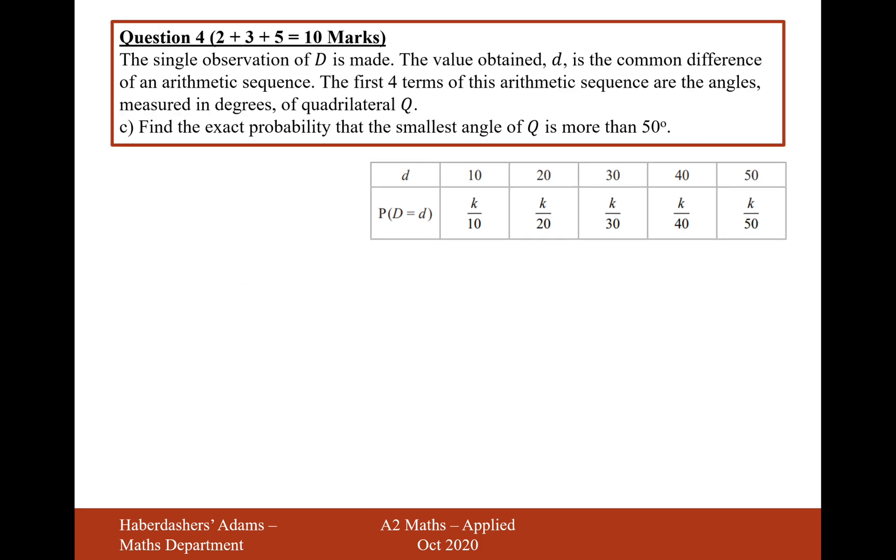Moving on to part C now. The single observation of D is made. The value obtained, which is little d, is the common difference of an arithmetic sequence. So an arithmetic sequence, just remember, is a plus (n minus 1) lots of d. And the value obtained, d, is the common difference of an arithmetic sequence.